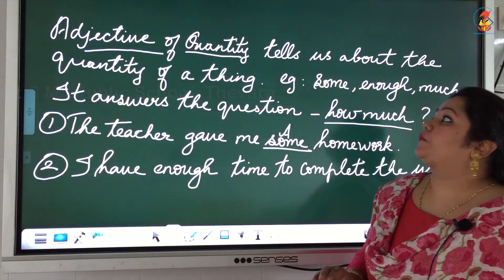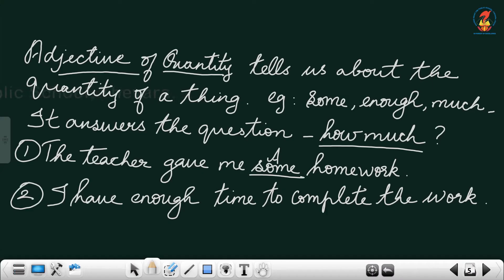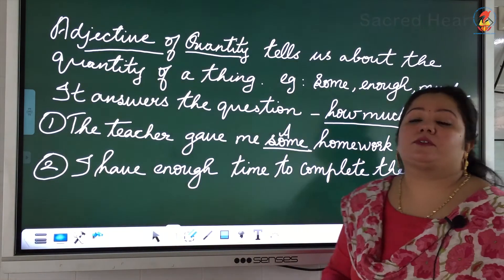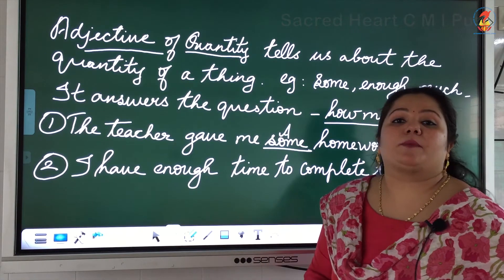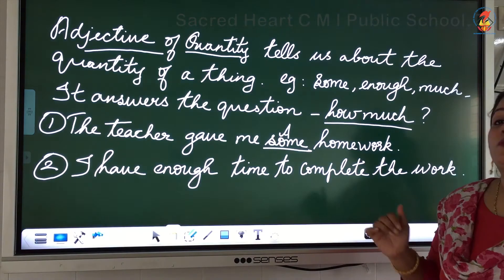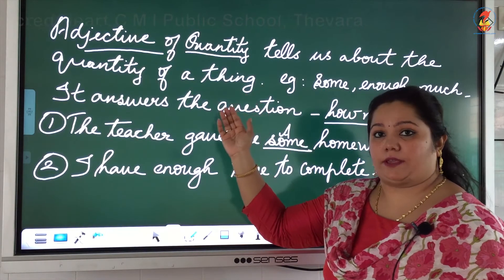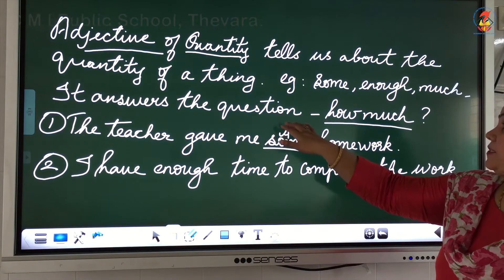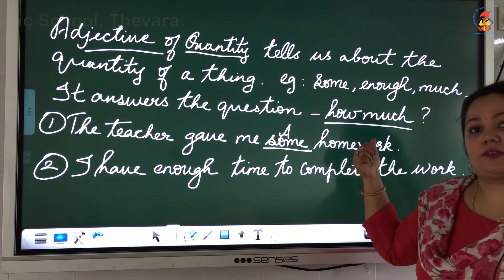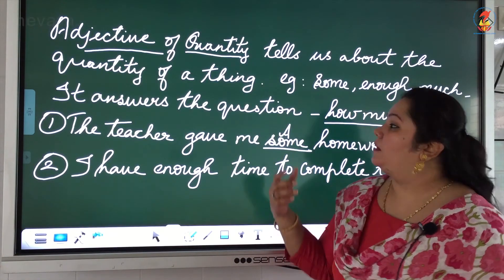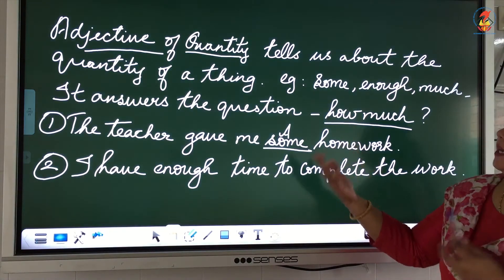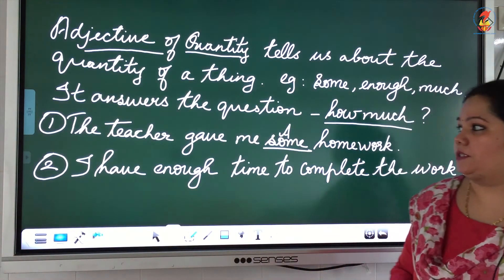The second type: adjectives of quantity. Adjectives of quantity tell us about the quantity of a thing. Example words include some, enough, and much. We use these when we talk about uncountable nouns — things we cannot count. They answer the question 'how much.' First example: The teacher gave me some homework. 'Homework' is a noun, and 'some' describes the amount of homework — we don't normally count it, so 'some' is an adjective of quantity answering 'how much.'